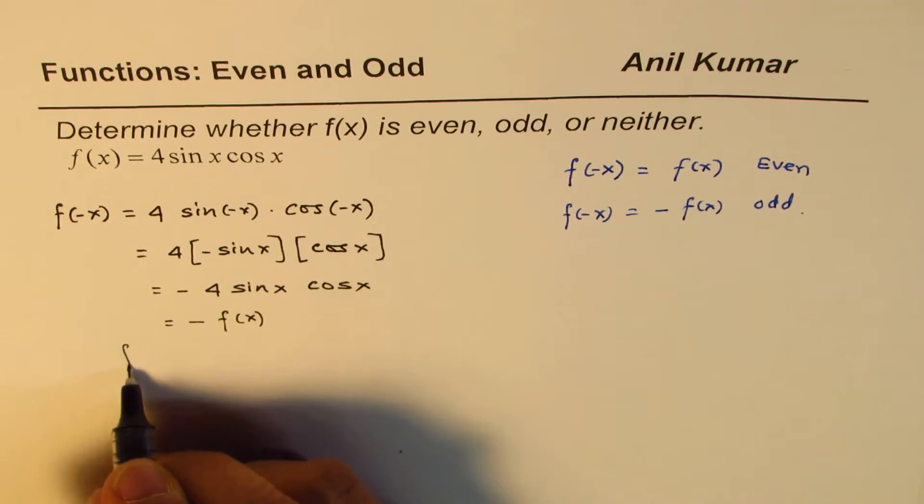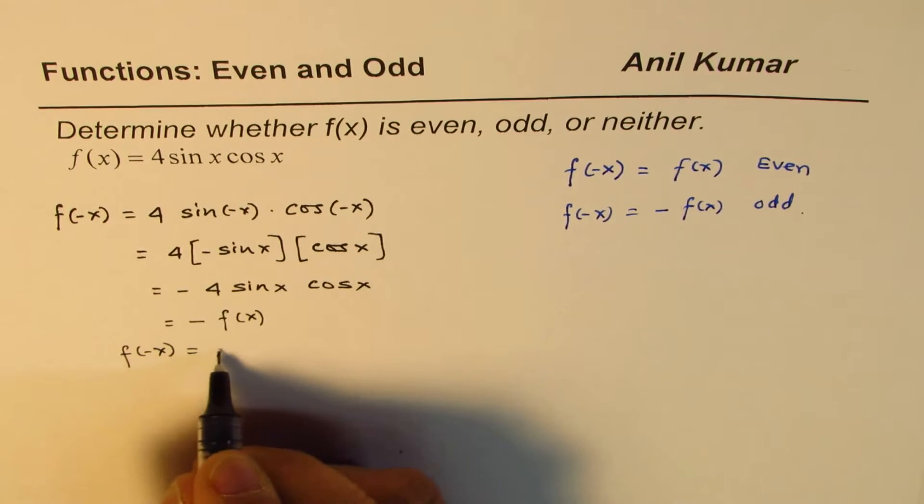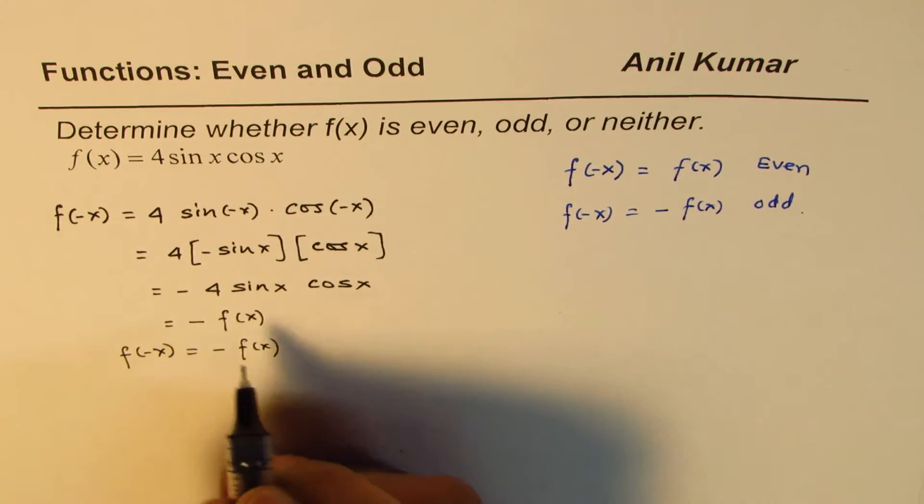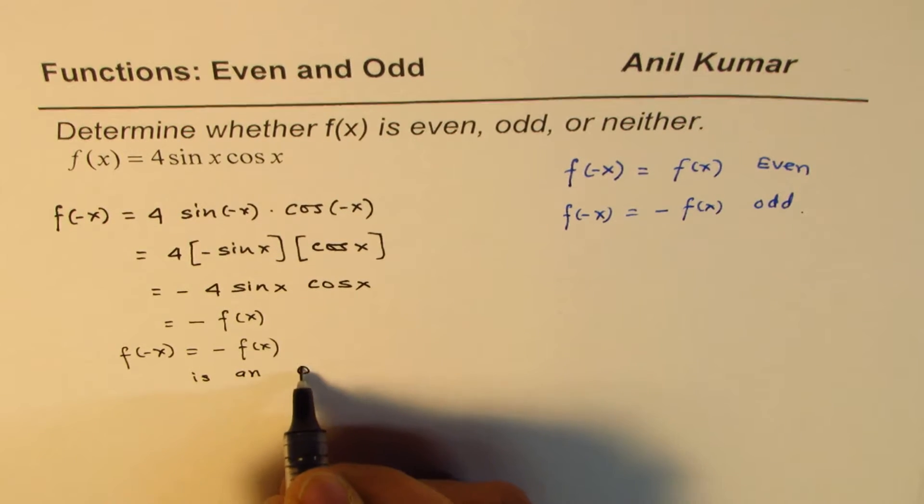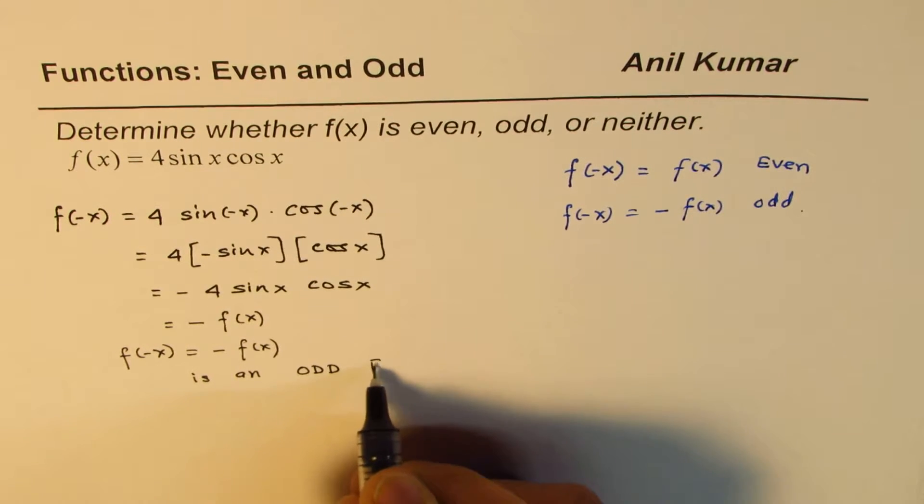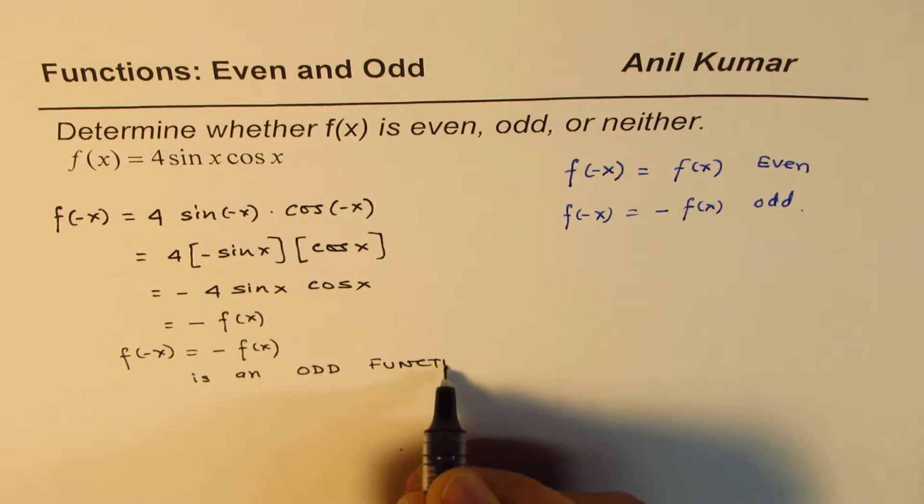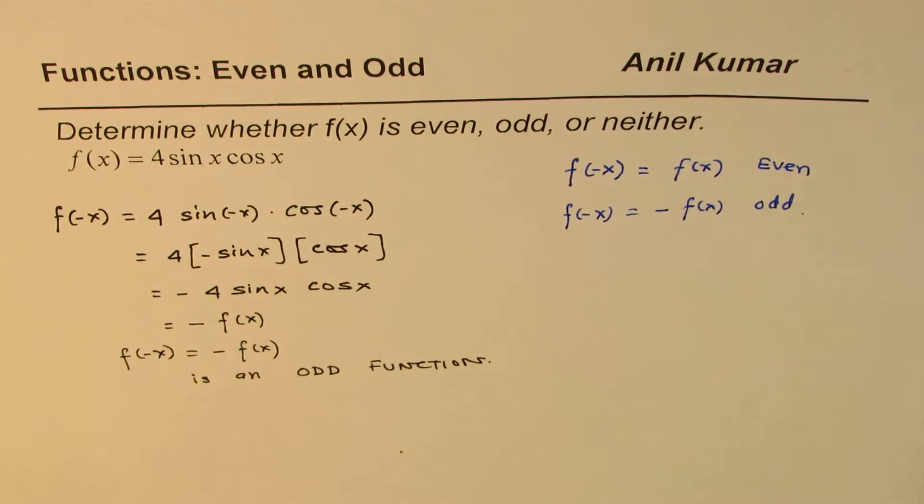Since f(-x) equals -f(x), the given function is an odd function. That is how we can prove it.